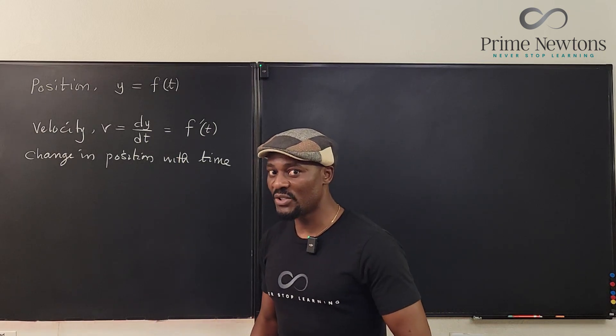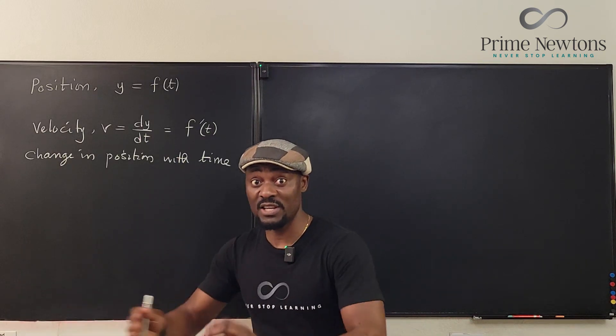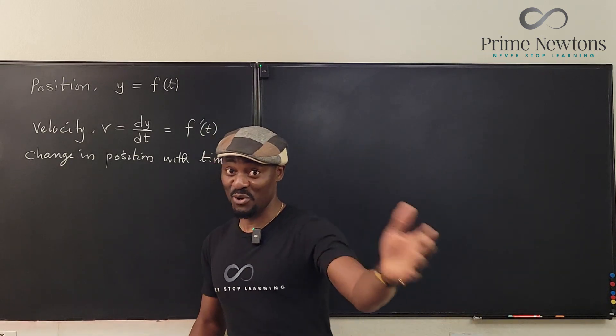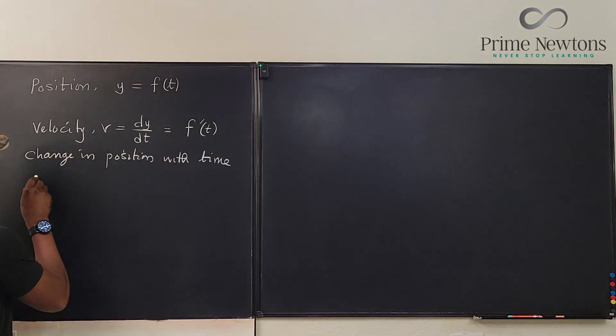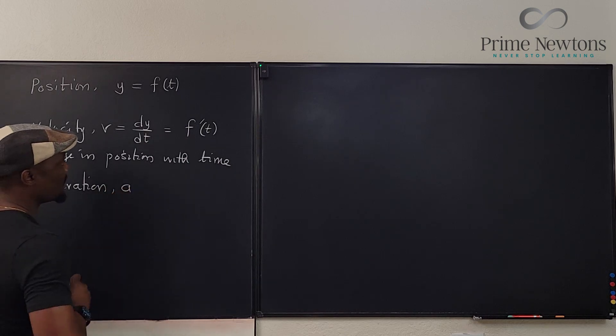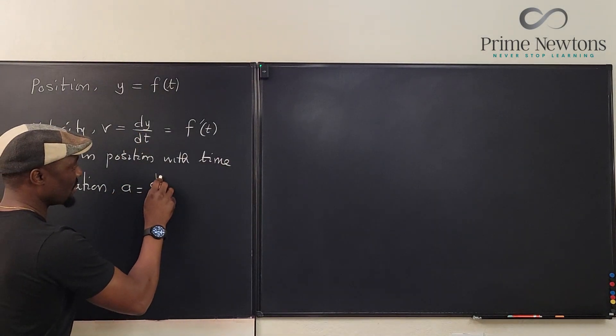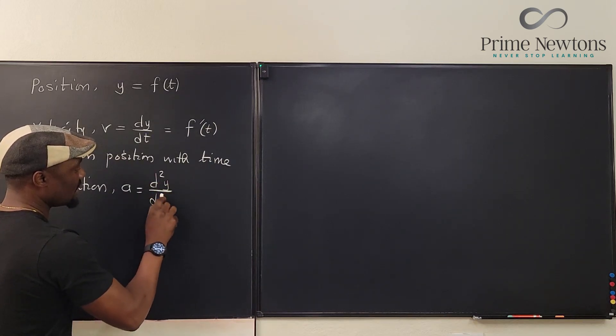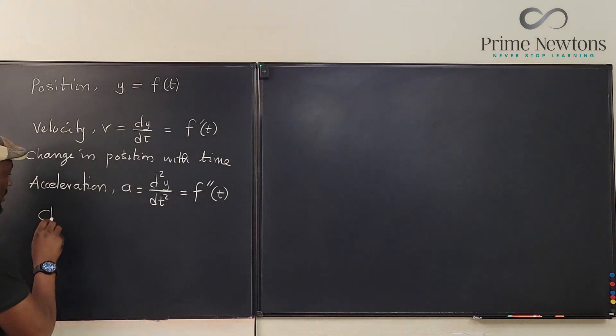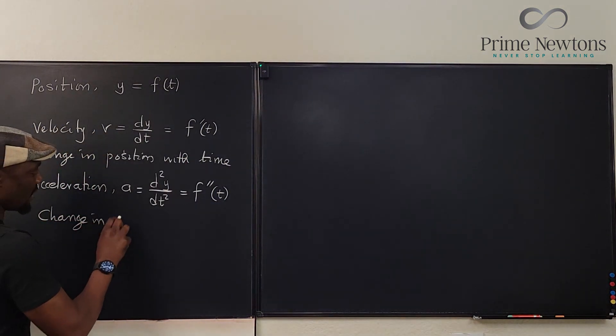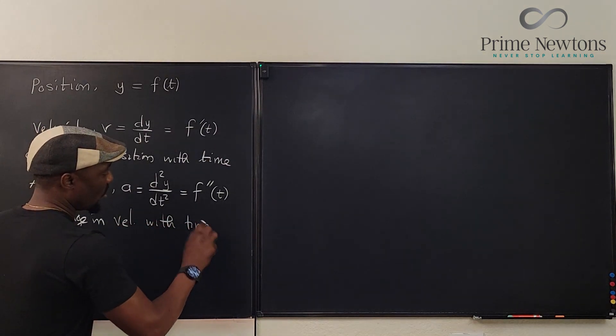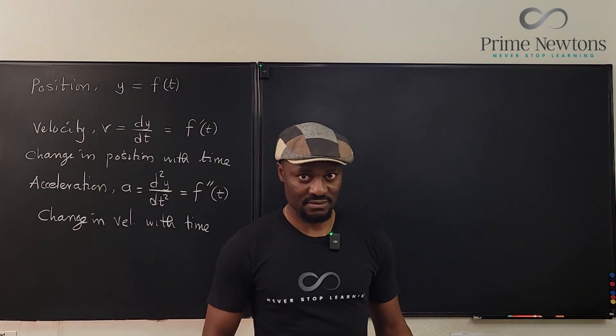Now, what's the next thing we're going to talk about? Acceleration. It is the change in velocity. It means you're going faster, or you're a soccer player, and you're trying to sprint to catch the ball before your opponent. So, we're going to say that acceleration, which is represented as small letter a, is the second derivative of the position function, which is d²y/dt², which is written this way, f double prime of t. And it is change in velocity with time. Or we say it's the rate of change of velocity.